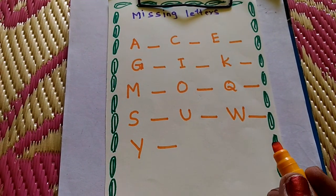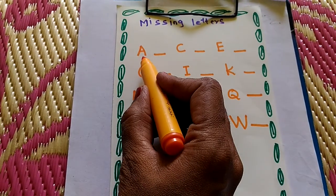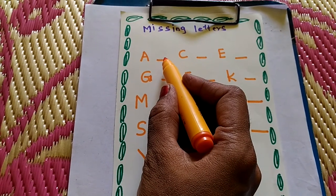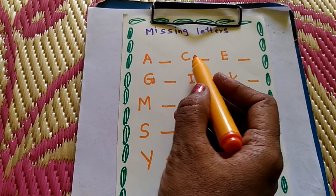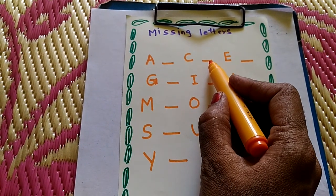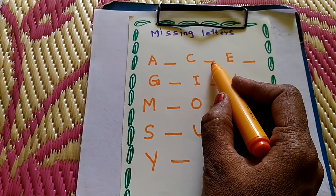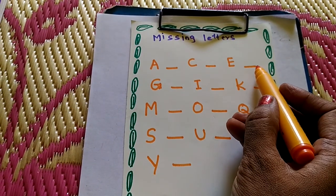Write the missing letters. A here, B missing. You write letter B here. C, then D. D missing, you write D. E, F missing, you write F.